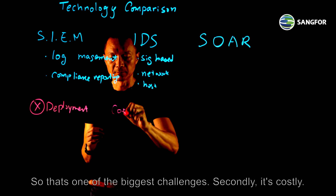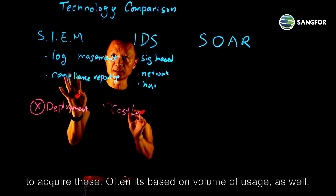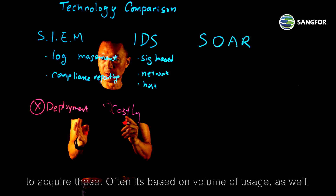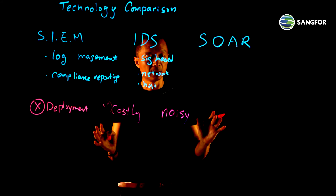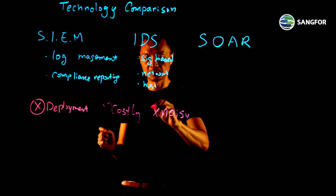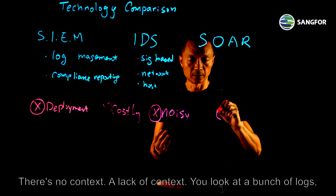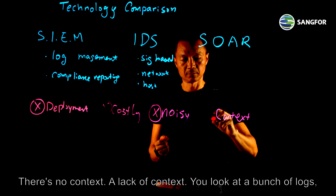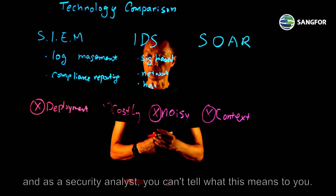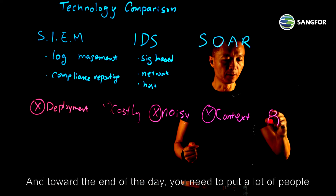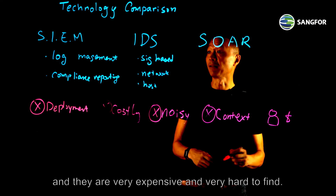Secondly, it's costly. Depending on the different types of technologies, it costs money to acquire these, and often it's based on volume of usage as well. And then there's the noise problem — you're going to get a ton of alerts that are very difficult to process. Even when you get a lot of alerts, there's a lack of context. As a security analyst looking at a bunch of logs, you can't tell what this means. And ultimately, you need to put a lot of people to run this operation — especially for SIEM, you need a full team, and they are very expensive and very hard to find.